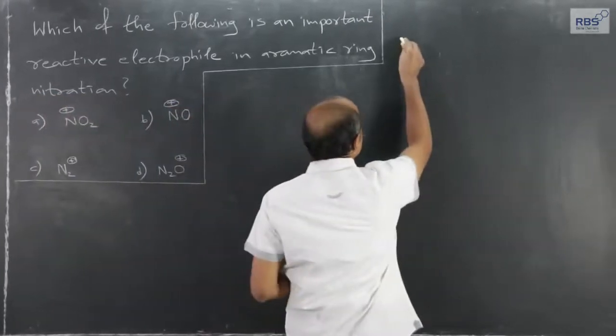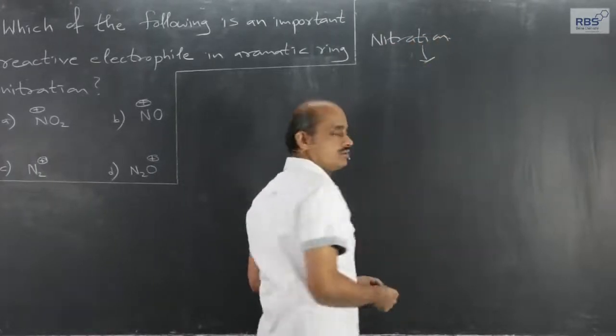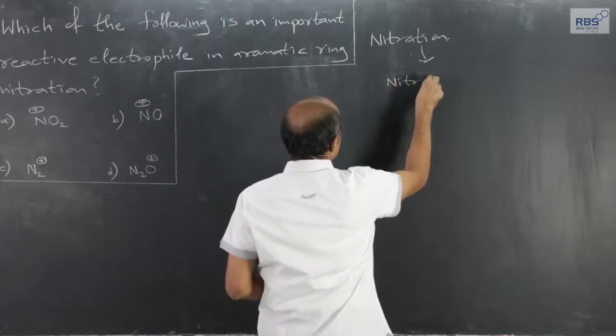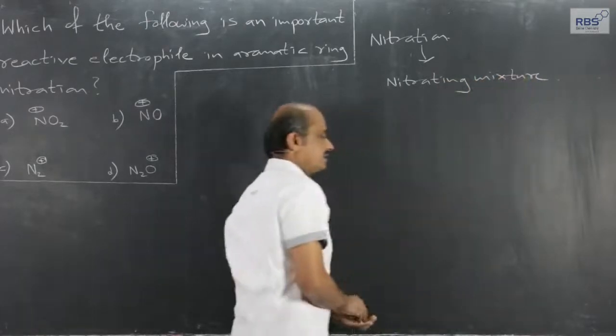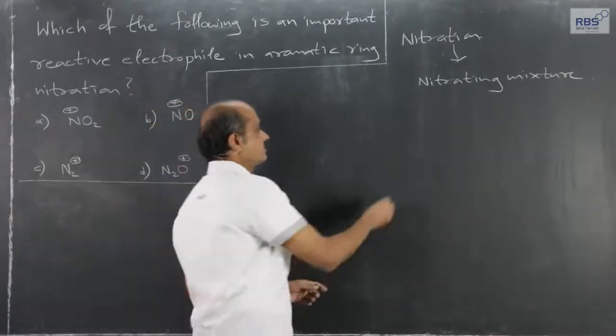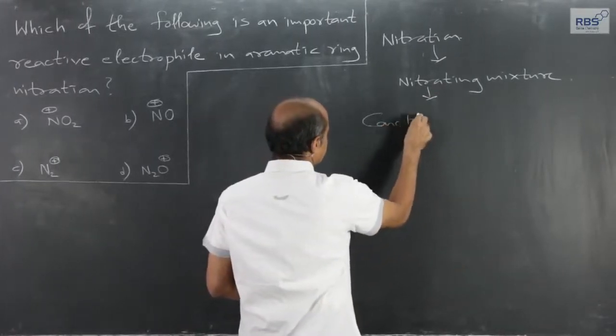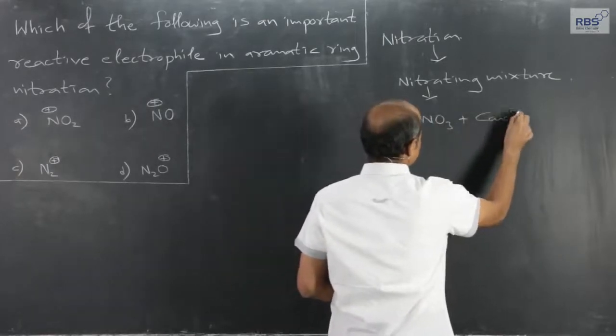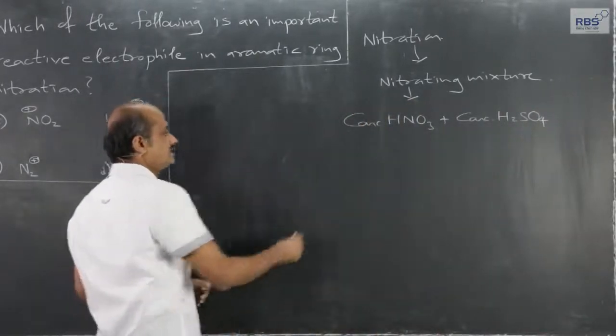During nitration, our nitration is carried out using what we call a nitrating mixture, which is a mixture of concentrated nitric acid and concentrated sulfuric acid. Now, why this mixture?